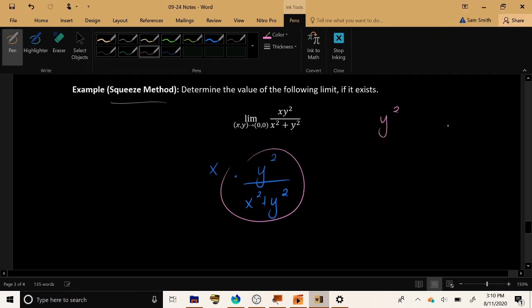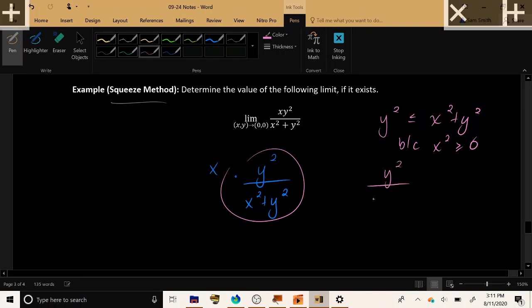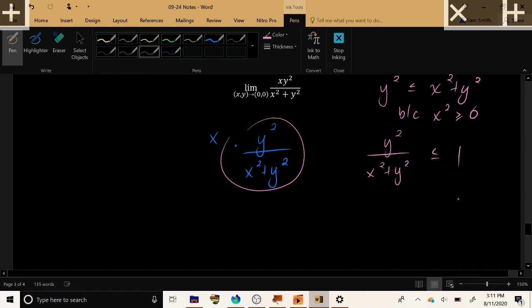Let's see why. Well, y squared has always got to be less than or equal to x squared plus y squared. Because x squared is positive, and so adding a positive number to y squared will give you a bigger result than what you had before. And that means if you divide y squared by this larger quantity, you're going to have something that's pretty small, less than or equal to 1.